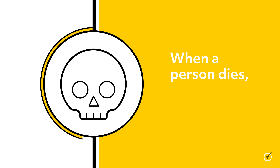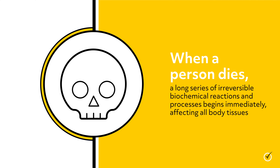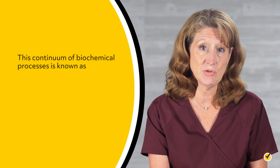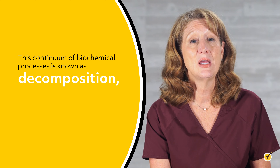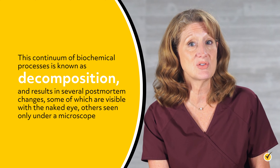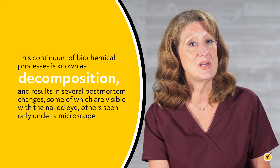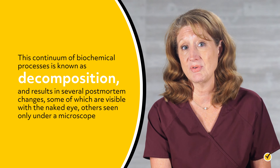When a person dies, a long series of irreversible biochemical reactions and processes begins immediately, affecting all body tissues. This continuum of biochemical processes is known as decomposition and results in several postmortem changes, some of which are visible with the naked eye, others seen only under a microscope.